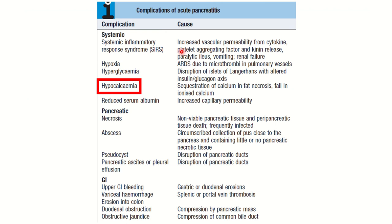Here is a reference box collected from Davidson's. We can see the complications of acute pancreatitis. Since the event starts after 48 hours, it is a complication of acute pancreatitis. The complications listed include SIRS (systemic inflammatory response syndrome), hypoxia, hyperglycemia, hypocalcemia, reduced serum albumin, pancreatic necrosis, pancreatic abscess, pancreatic pseudocyst, pancreatic ascites or pleural effusion, and upper GI bleeding. Hypocalcemia is clearly listed as one of the complications.